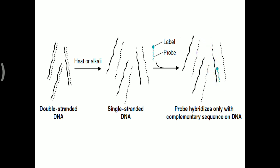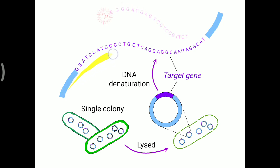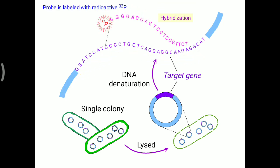Once the probe is attached, radioactivity can be detected using X-ray or autoradiography to determine whether the probe has bound to a particular DNA. In a practical example: from a single colony, DNA is separated and denatured using heat or alkali. A probe labeled with radioactive P32 is added, and if it attaches to the targeted gene, the radioactivity will be visible under autoradiography, confirming that the targeted gene is present in the colony.